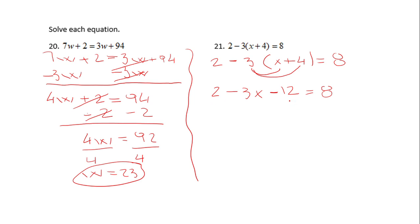Now what do you notice here? We have 2 and minus 12. They are like 2 minus 12, which is negative 10. Negative 10 minus 3x equals 8. We're going to add that now because I'm going to eliminate that negative 10. And we're going to divide by negative 3.